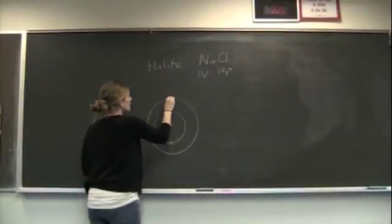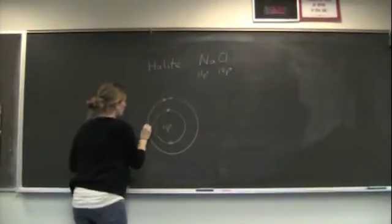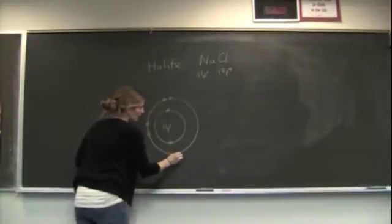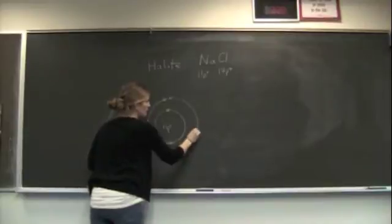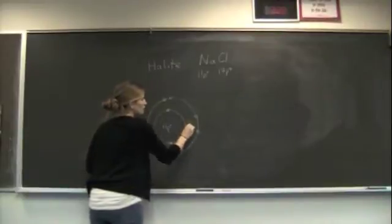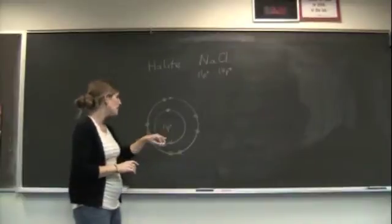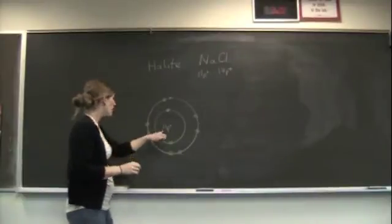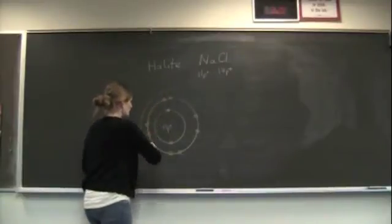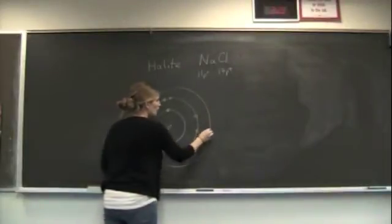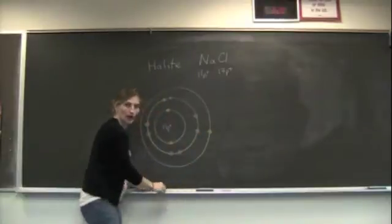So we have three, four, five, six, seven, eight, nine, and ten electrons. Remember, we need to have 11 electrons to balance out the 11 protons in the nucleus. So we have one more valence shell, and it's going to have this one little electron hanging out.